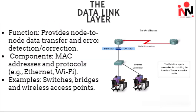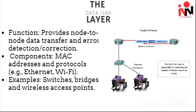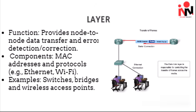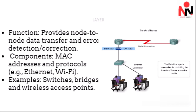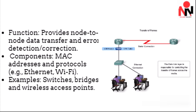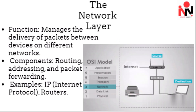The data link layer provides node-to-node data transfer and error detection or correction. The components include MAC addresses and protocols like Ethernet and Wi-Fi. Examples include switches, bridges, and wireless access points.